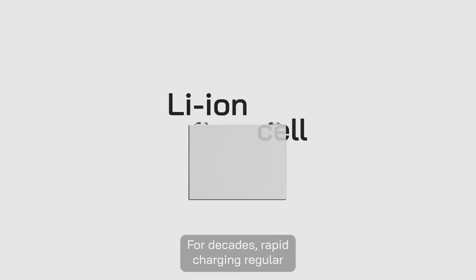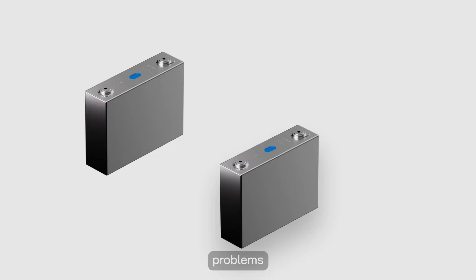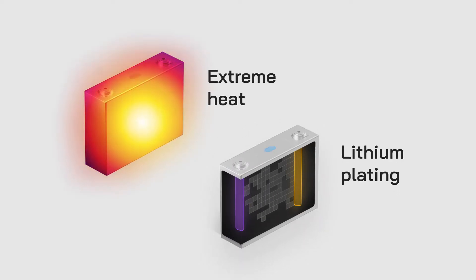For decades, rapid charging regular lithium-ion cells was riddled with two major problems: lithium plating and extreme heat. Now let's dive deeper.